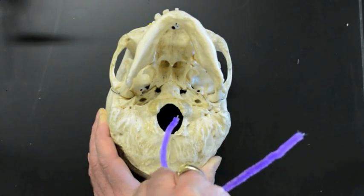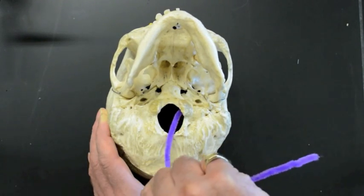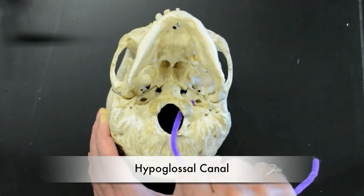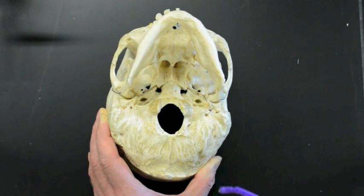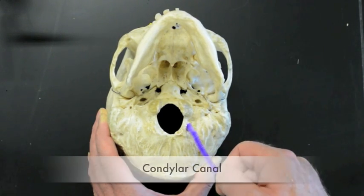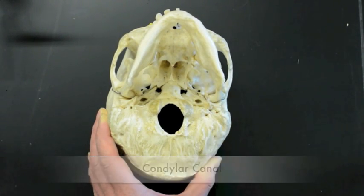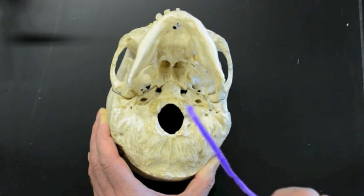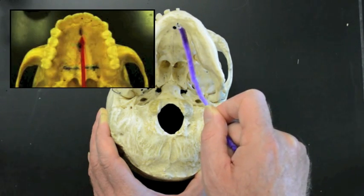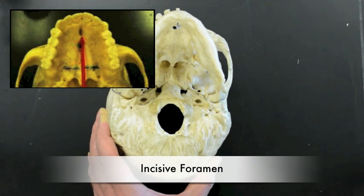If we look under here, we have a foramen right here, and this is the hypoglossal canal. We have another foramen that's not open on this skull that's called the condylar canal. And right on the roof of the palate, by the incisors, we have the incisive foramen.